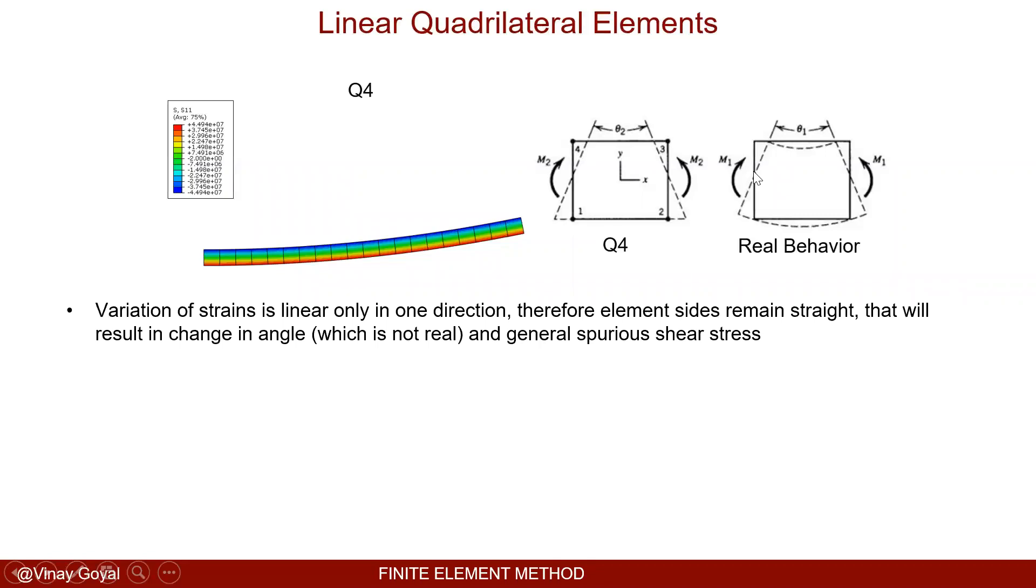The variation of strains is linear only in one direction, therefore the element sides remain straight. That will result in a changing angle which is not real. You can see here there's a changing angle that's just not quite right and that will generate a spurious or unrealistic shear behavior.